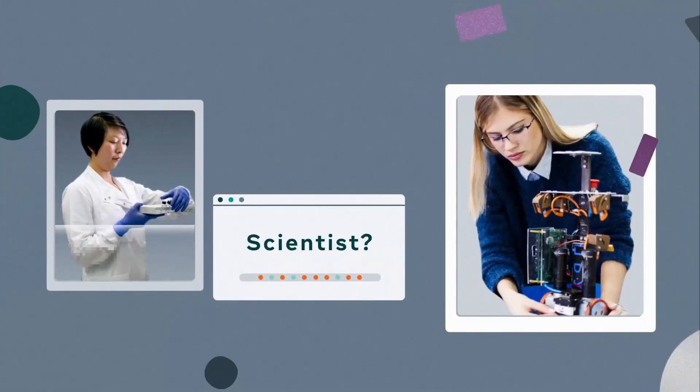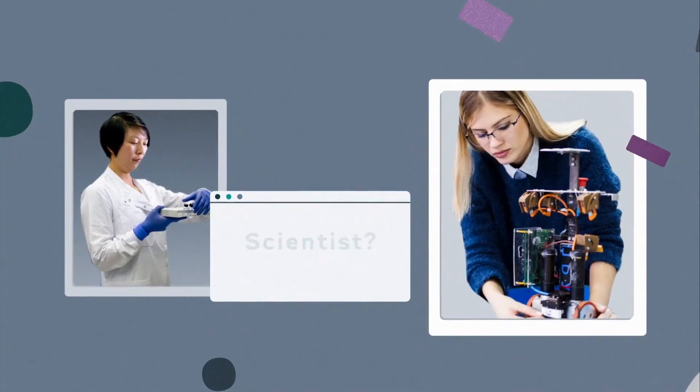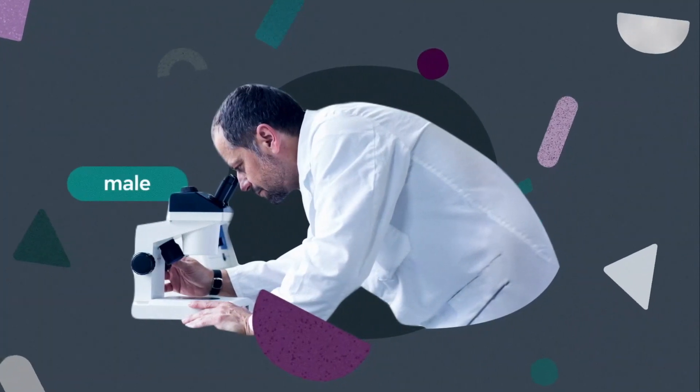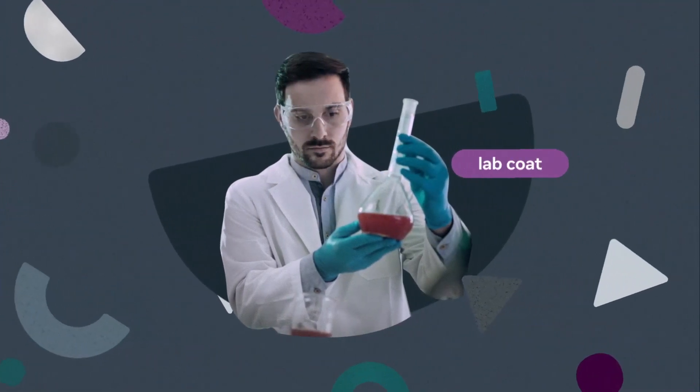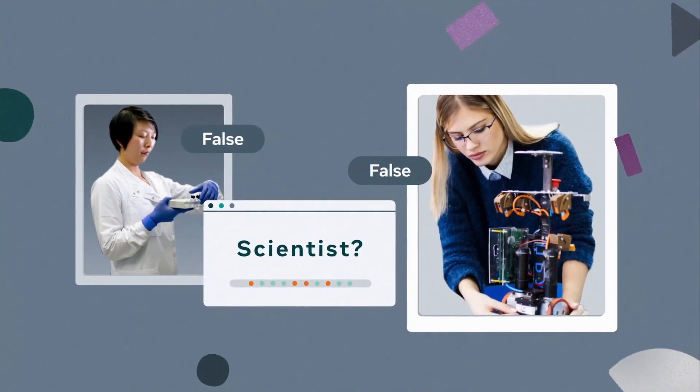For example, say you're training AI to identify images that feature a scientist. If the AI system is learning from a set of examples with mostly male subjects or people in lab coats, it will assume that only men or only people wearing lab coats can be scientists.